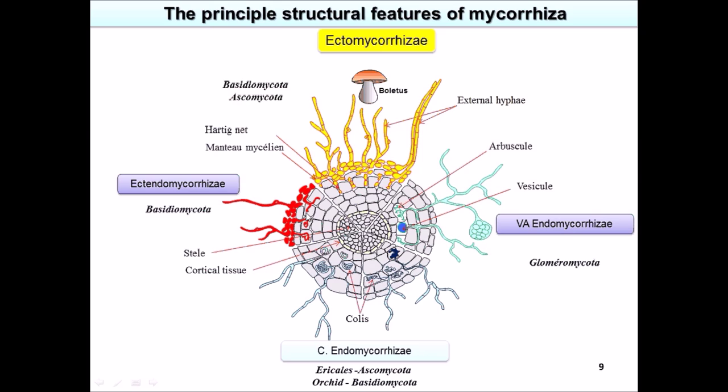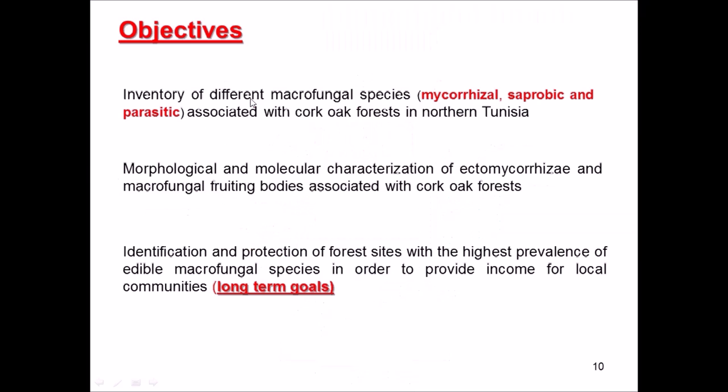In my research I'm interested in ectomycorrhiza, which are mainly derived from Basidiomycota and Ascomycota. The objectives of my study are: first, to make an inventory of different macro fungal species — mycorrhizal, saprotrophic, and parasitic — associated with cork oak forest in northwestern Tunisia. I also performed morphological and molecular characterization of ectomycorrhiza and macro fungal fruiting bodies, and I aimed to highlight edible macro fungal species that can be a source of food or additional income for local communities.